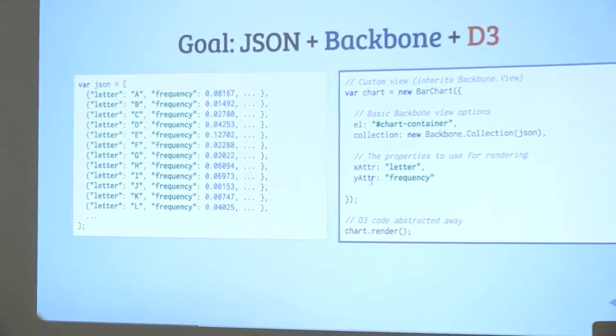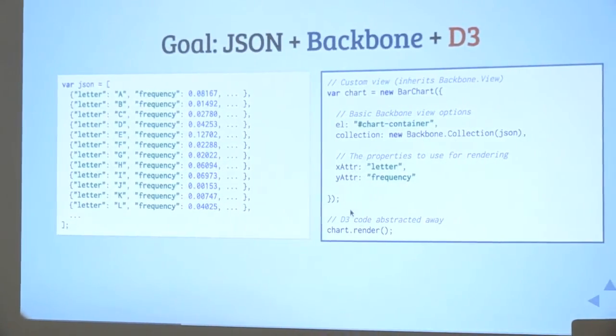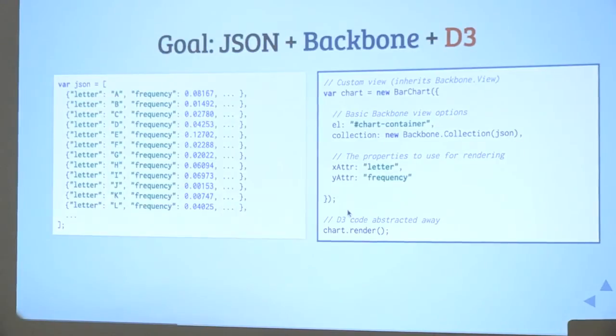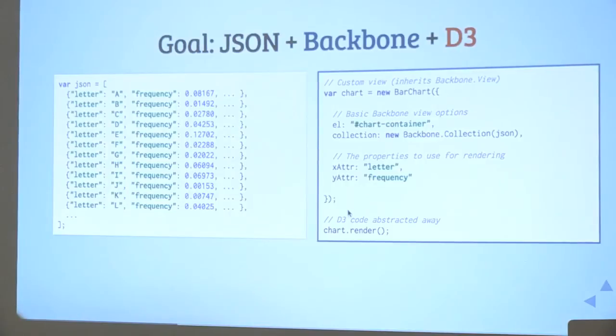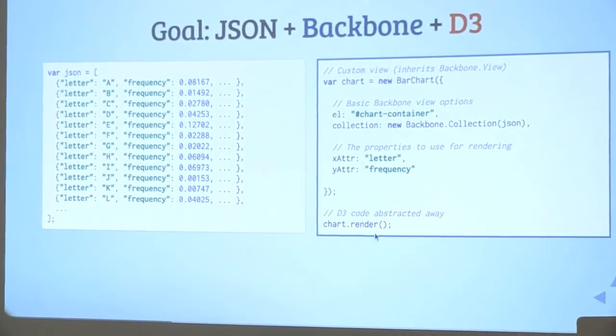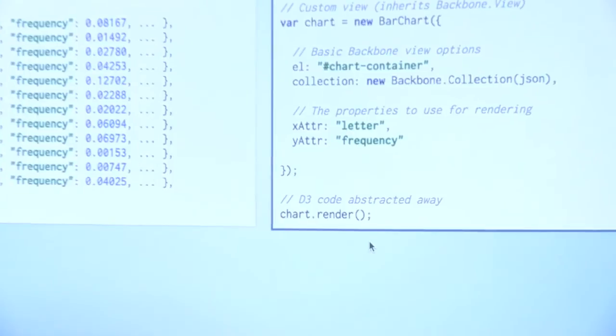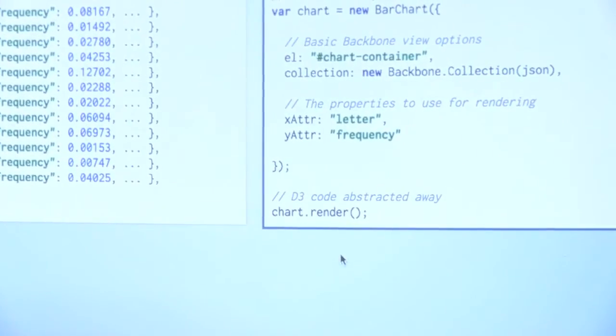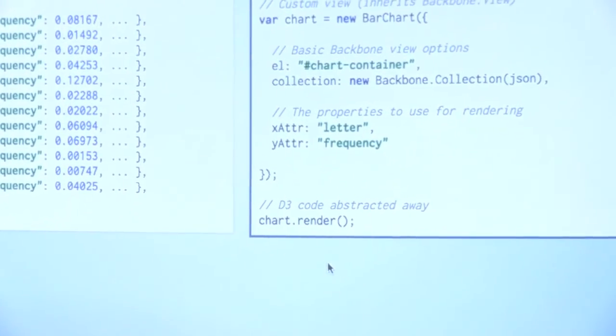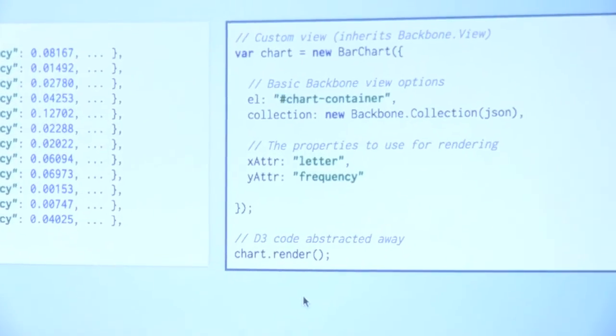It basically looks like this JSON here. And then we define just the minimal amount of configuration we have to do for a bar chart. Just say which properties get mapped to which axis. So we'll have the letters on the X axis and the frequency on the Y axis. And then we just render it. And this line here runs all the D3 code. So it's all hidden away. And well, if you don't know D3, it doesn't matter. But of course the developer who has made this framework knows a lot about D3.